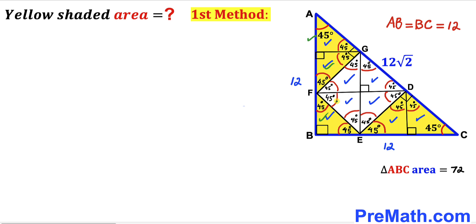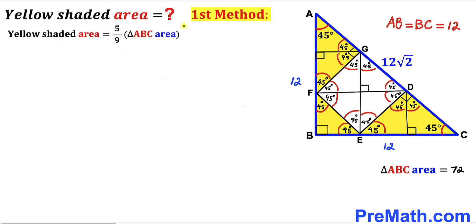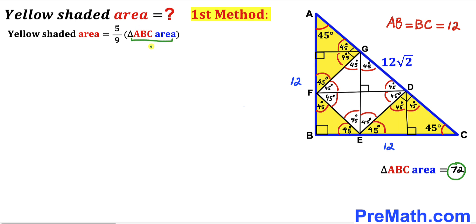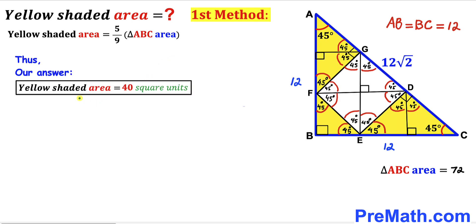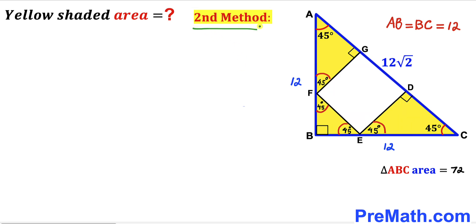Counting: one, two, three, four, five, six, seven, eight, and nine congruent triangles. Of these, five are yellow triangles. Therefore, the yellow shaded area equals 5/9 times the area of triangle ABC. We already found the triangle ABC area is 72, so: yellow area = 5/9 × 72 = 40 square units. The area of the yellow shaded region is 40 square units by the first method.